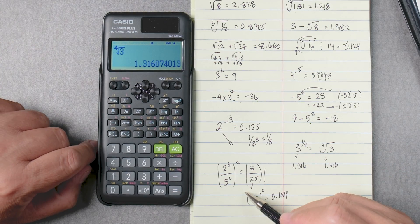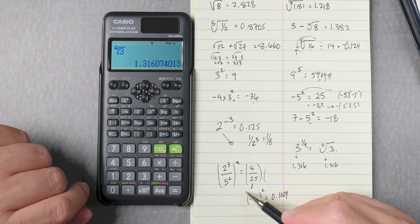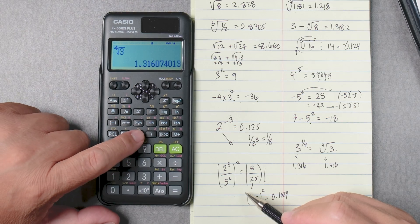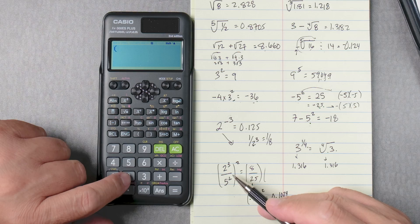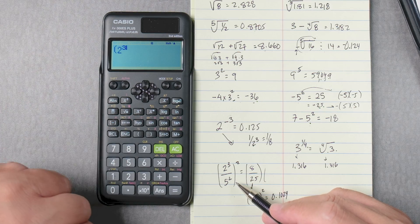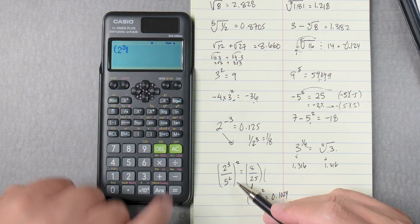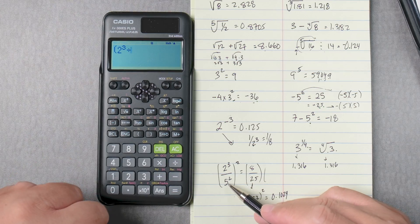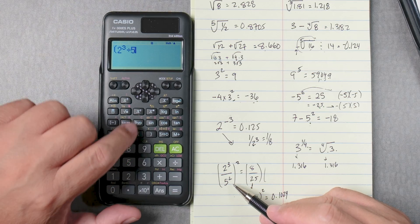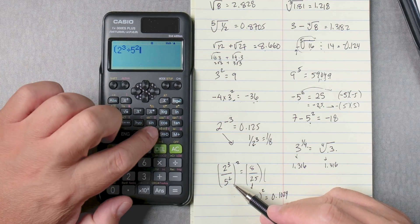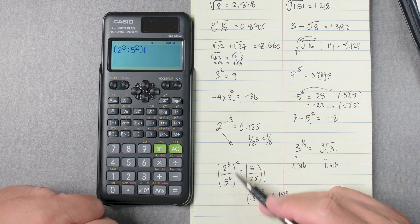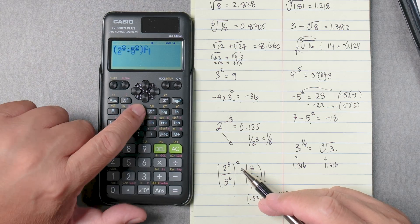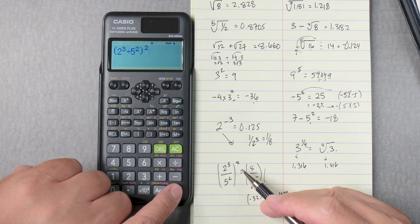All right, this one. Let's see if we can do it this way. So we're going to put parentheses, 2 to the 3, 2 to the power of 3, and then move it down, divide, 5 squared, 5 squared, close it, to the power, actually to square all this. So we're going to square all this, and then press equals.